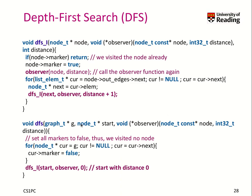Let's look at how this works in our implementation. We have a wrapper function that takes a graph, a start node, and an observer — a function that will be called with the distance and the node information. Here I used the full node and not just the character. First, we set all the markers to false, meaning we have visited no node.